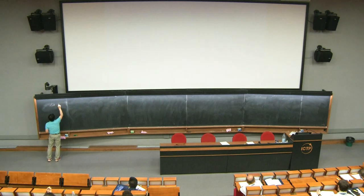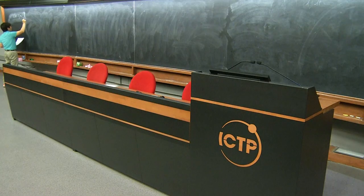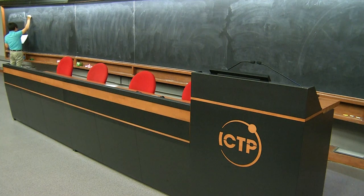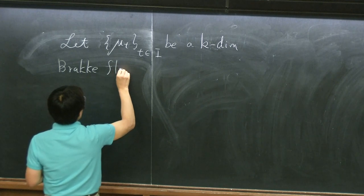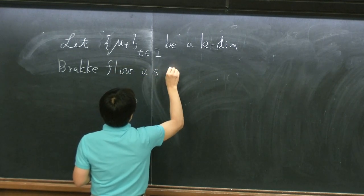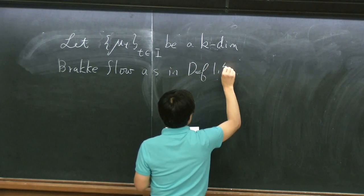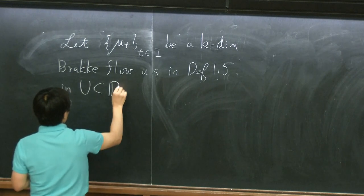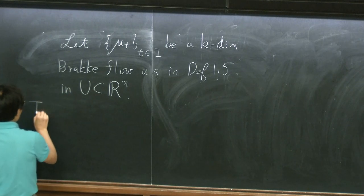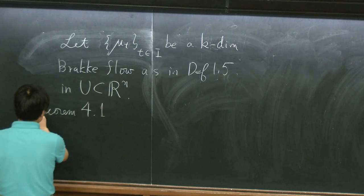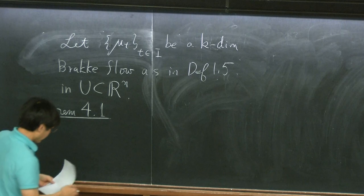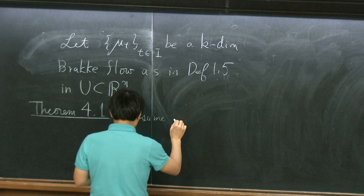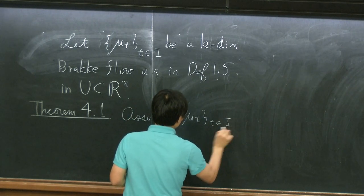So let mu_T be the Brakke flow. This is totally a local thing, so let me say that k-dimensional Brakke flow in some open set — I kept talking about Brakke flow in whole R^n, but it doesn't have to be in the whole R^n — as in definition 1.4 or 1.5, in some open set in R^n. And then the following is Theorem 4.1. So this is just any general Brakke flow, k-dimensional Brakke flow, but there's an assumption I make here: assume that this mu_T is, in addition, a unit density flow.